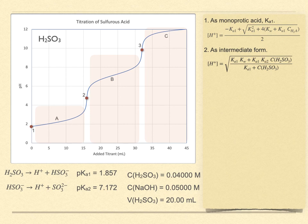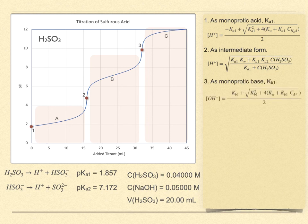And point three is the second equivalence point. All of the original acid has now been converted to the fully basic form. We treat this as a monoprotic base and use the quadratic solution with water again. Make sure to use the correct value for Kb1. It's Kw over Ka2. And again, remember that the original formal concentration has now been diluted by the addition of water in the amount of the added titrant. Correct for this dilution. And also, this calculation produces the hydroxide ion concentration. Take the pOH, subtract from 14 to find the pH.